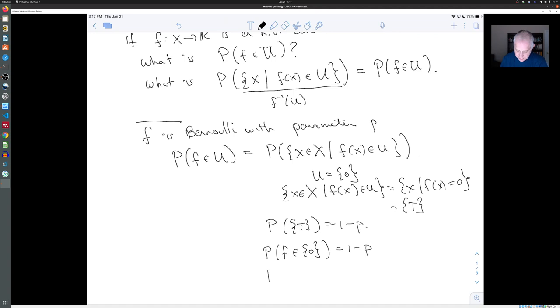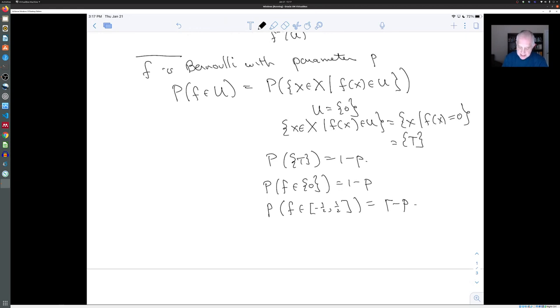So the probability that f is in the set zero is one minus P. But even also the probability, for example, that f is in the set minus a half to a half is also one minus P. Because the only elements of X are heads and tails, heads goes to one. So f of heads is not in U. But f of tails is in U. So f inverse of U is still just tails.